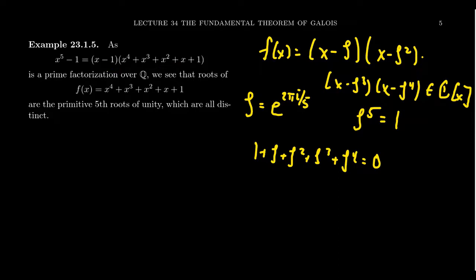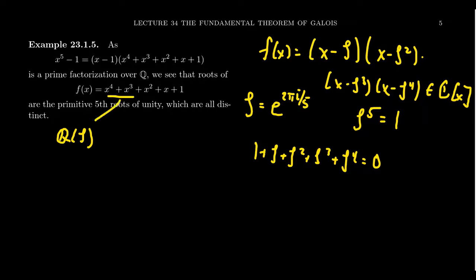What we want to do is compute the Galois group for the following field extension. Consider the field Q adjoined zeta. The four roots of this polynomial are zeta, zeta squared, zeta cubed, zeta to the 4th. So if you have zeta inside your field, you have every power of zeta. Adjoining one complex root of unity to Q gives you the splitting field for our cyclotomic polynomial, over the rationals.